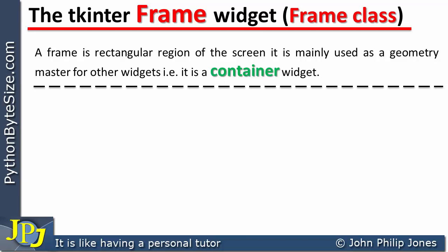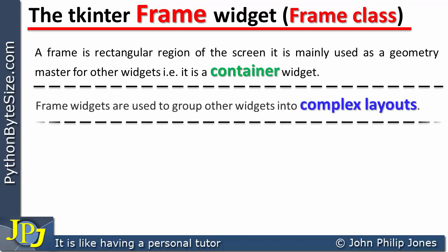A frame is a rectangular region, which obviously could include a square region, and you put onto this frame widgets such as labels, buttons, entry widgets and so on. The frame contains those other widgets. When the widgets have been added to a frame, you then add the frame to the window. Frame widgets are used to group other widgets into complex layouts.